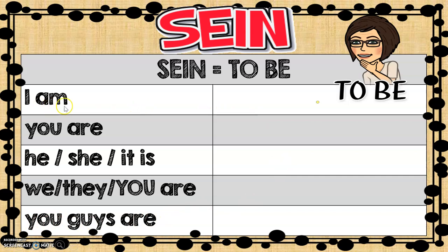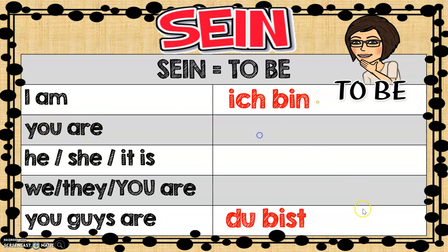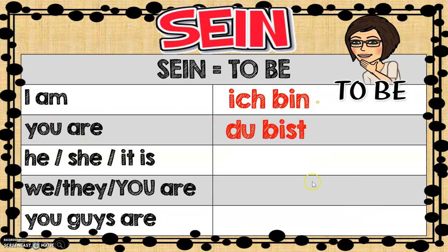So 'I am' is 'ich bin' — you just have to memorize it. 'I am' — 'ich bin.' 'You are' — 'du bist.' 'Er, sie, es' — 'ist.'